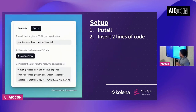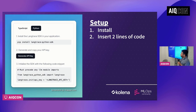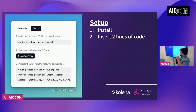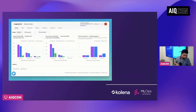LangTrace is open source and OpenTelemetry-based. You can self-host and run it, or you can use the cloud-hosted version we are offering. The setup is literally two lines of code — you install the SDK, generate an API key from LangTrace, and we instantly start tracing all the layers: framework, LLM, and VectorDB.